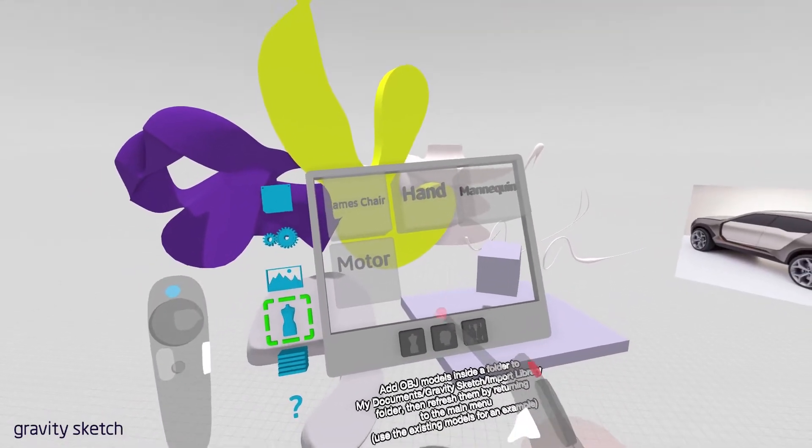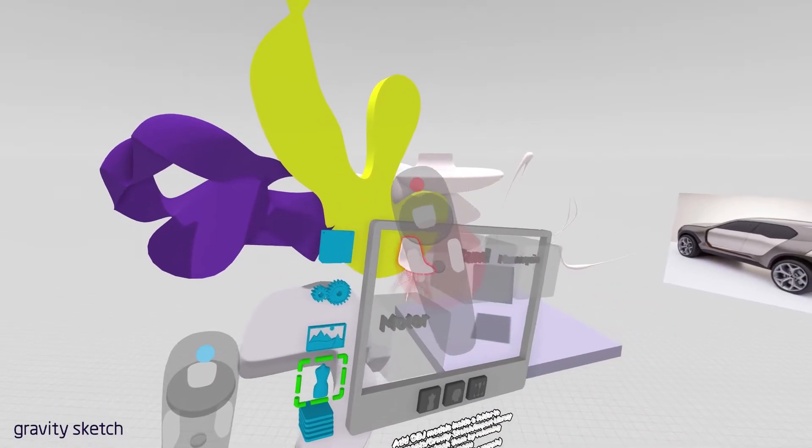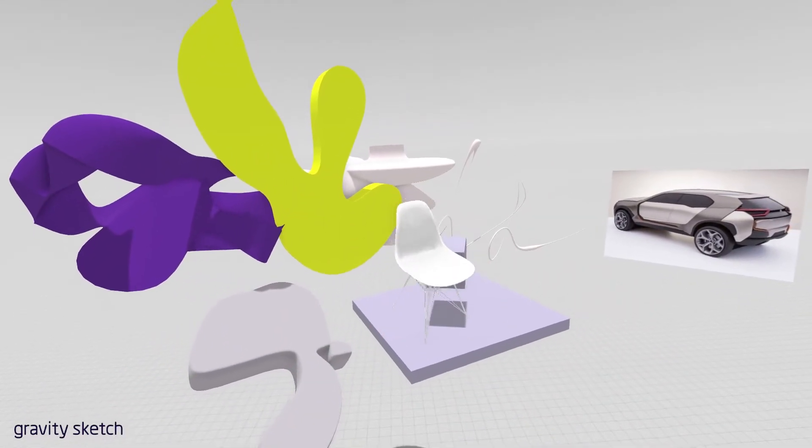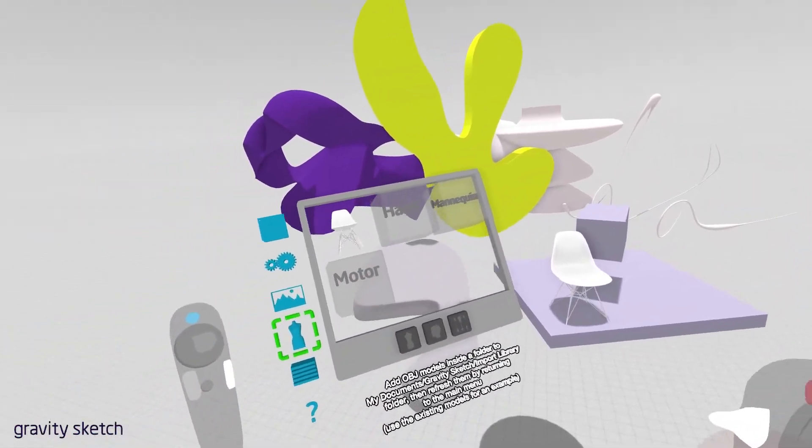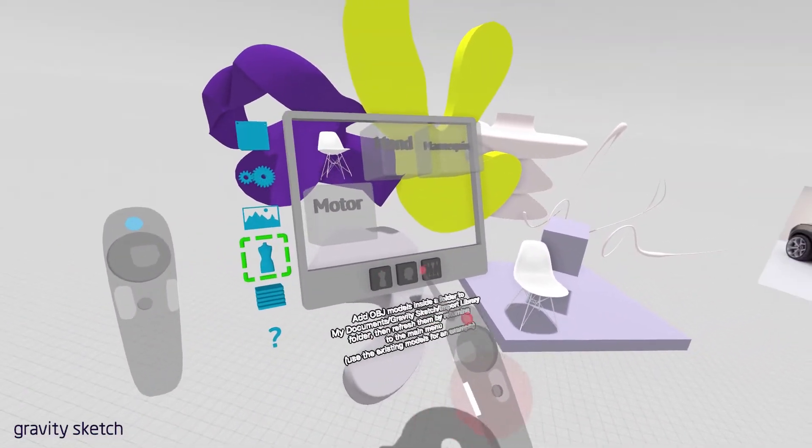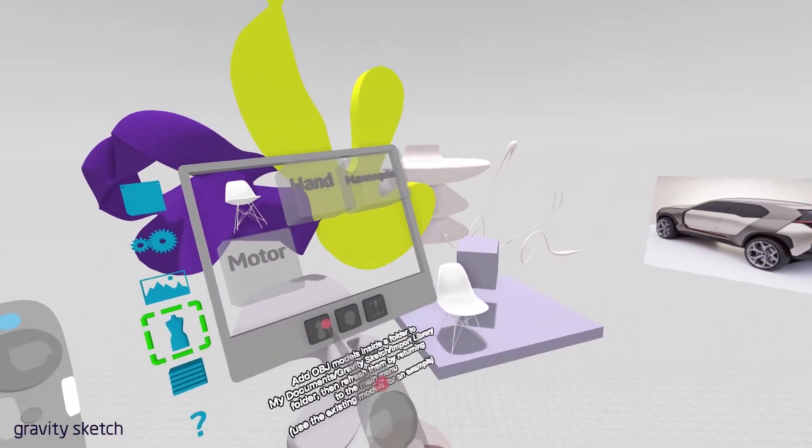You could also bring in your own geometry. So let's say I wanted to bring in a chair. I've uploaded this. And now I'm going to add this to my scene. We offer a few stock pieces of content to help you get started on your own.